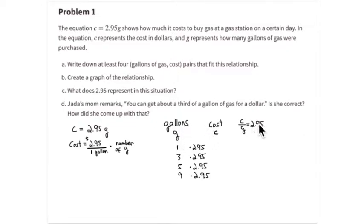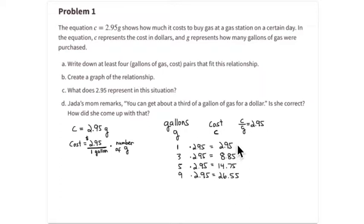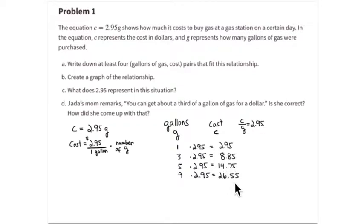You get the cost by multiplying the number of gallons times two dollars and ninety-five cents. So cost divided by number of gallons equals two dollars and ninety-five cents, and therefore you multiply the number of gallons by two ninety-five to get the total cost. The computed values are: two dollars and ninety-five cents, eight dollars and eighty-five cents, fourteen dollars and seventy-five cents, and twenty-six dollars and fifty-five cents.